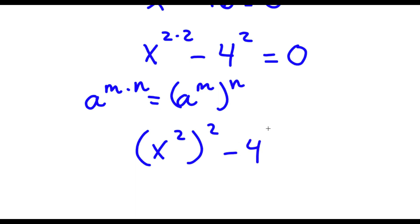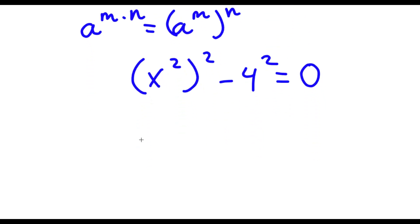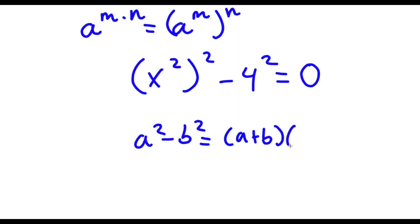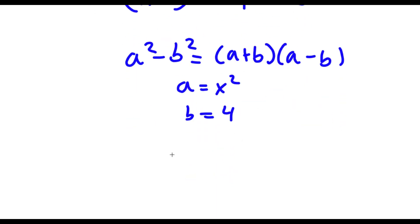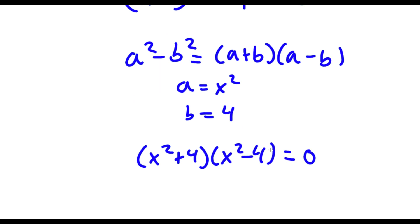Now I have this minus 4 to the power of 2 is equal to zero. If I have something in the form a squared minus b squared, this is equal to a plus b times a minus b. So in this case a is equal to x squared and b is equal to 4. So now I have x squared plus 4 times x squared minus 4 is equal to zero.